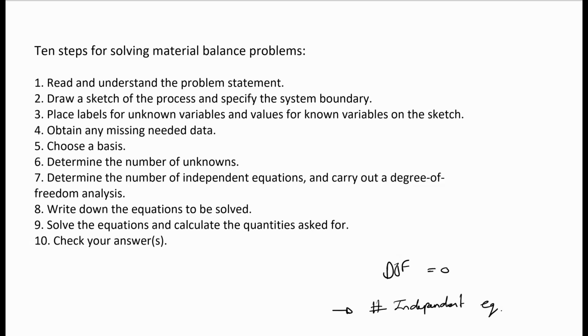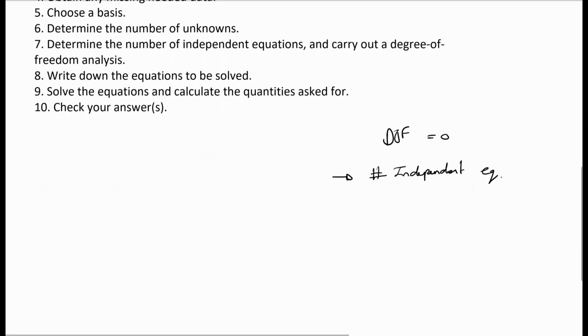The number of independent equations depends on the number of species in the system and also the number of places in the system where we have a change in mass. If we have two unit ops and I have two places where the total mass flow rate of the system changes, then I can do two independent mass balances either over every single unit or over one of the units and a total balance.